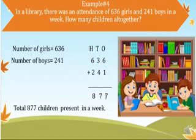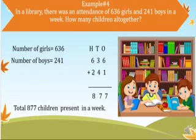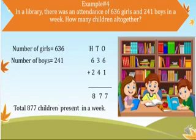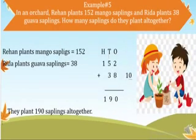You can see here 6 and 1 are in the 1's place, so we add the digits in the 1's place first — this is equal to 7. Now we add the digits in the 10th place: that is 3 and 4, and their answer is 7, so we write 7 in the 10th column. Then 6 plus 2 — we add the digits in the 100th column — this is 8, so we write 8 in the 100th column. So the total is 877 children present in a week.